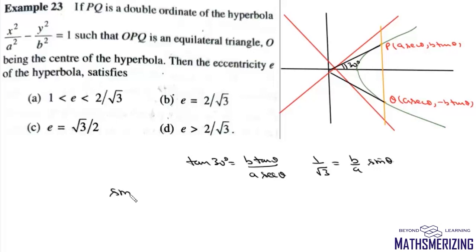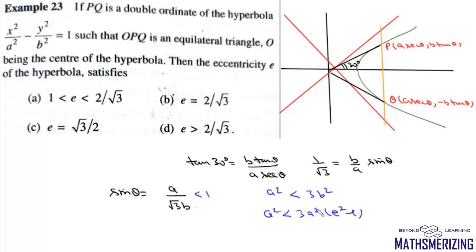So 1/√3 = (b/a)·sinθ, giving sinθ = a/(√3·b). Since sinθ < 1, we need a < √3·b, i.e., a² < 3b². Substituting b² = a²(e² - 1) and cancelling a²: 1 < 3(e² - 1), so 3e² > 4, giving e > 2/√3. The eccentricity of the hyperbola must satisfy e > 2/√3.